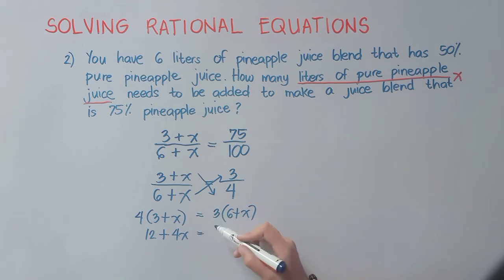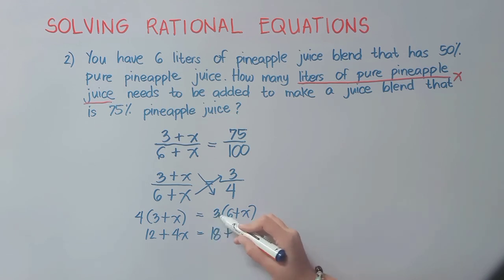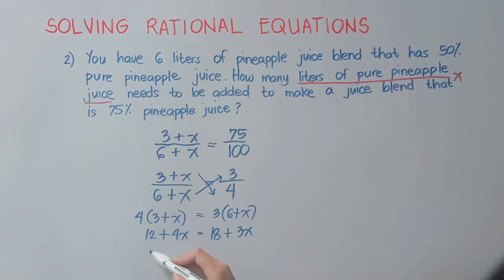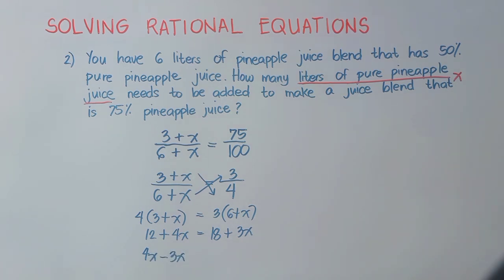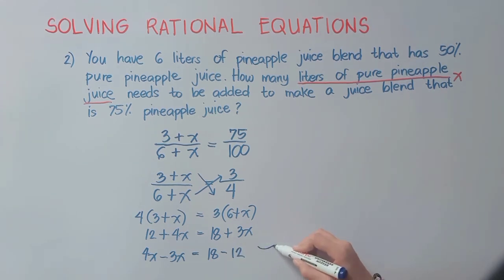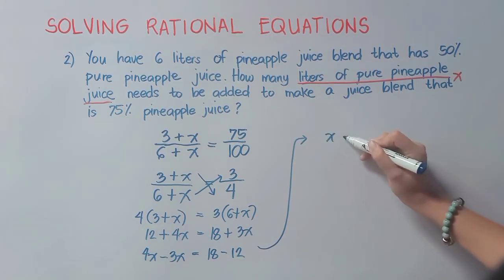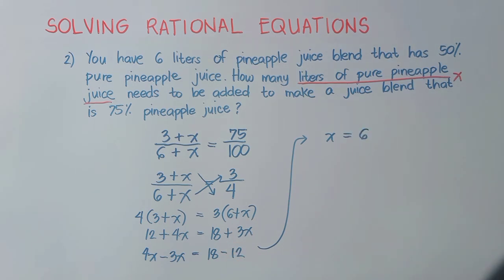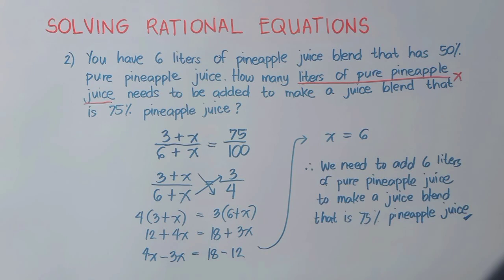Place all terms with variables on the left side: 4x minus 3x, equals 18 minus 12. So x = 6. Therefore, we need to add 6 liters of pure pineapple juice to make a juice blend that is 75% pineapple juice.